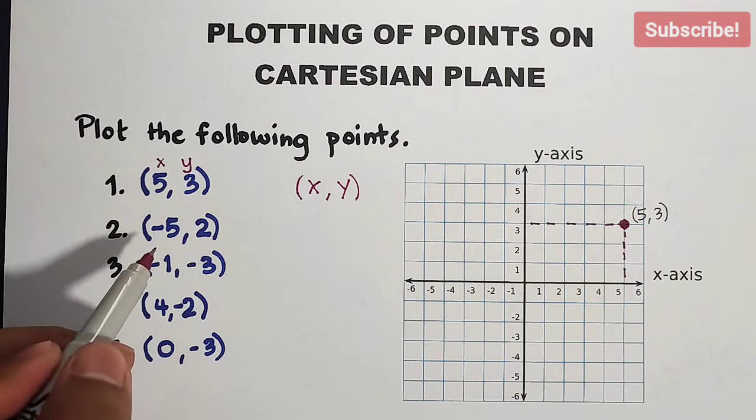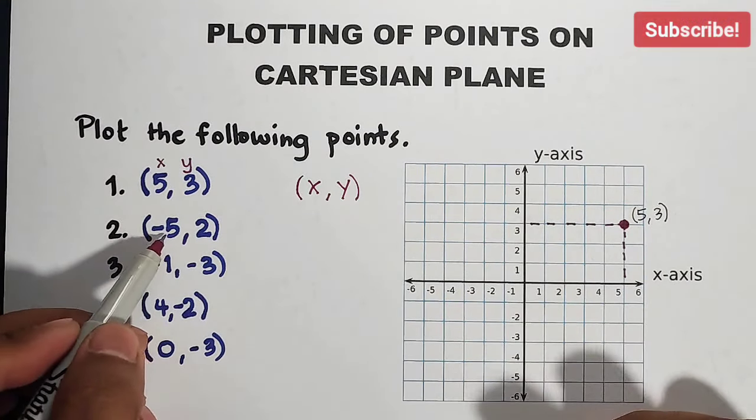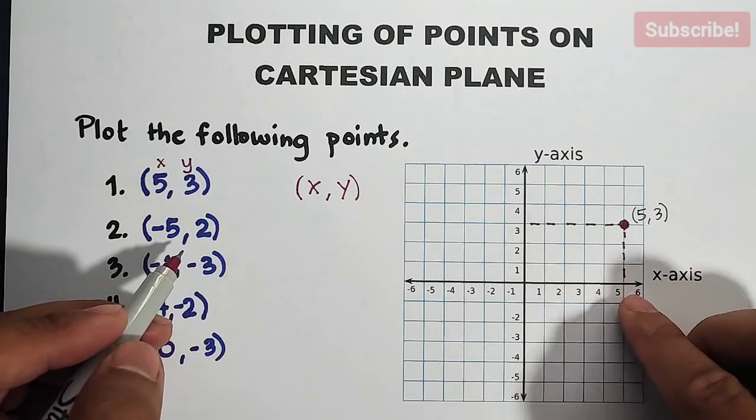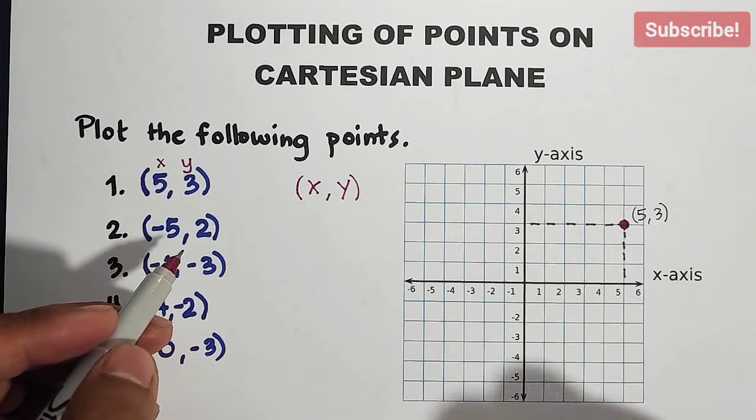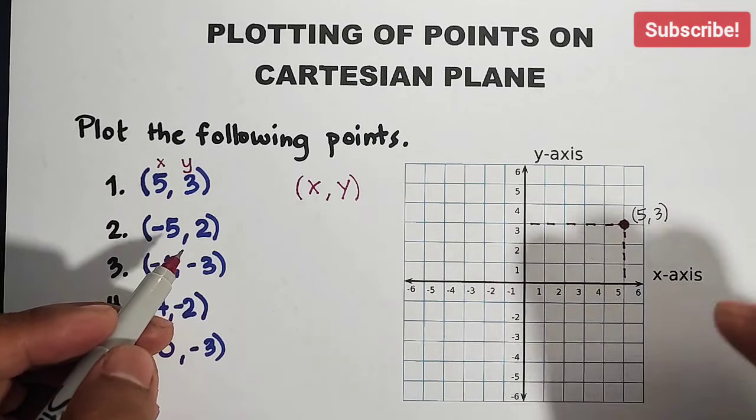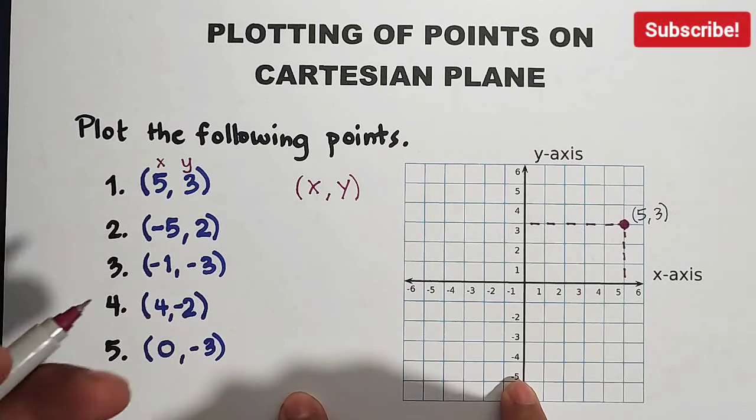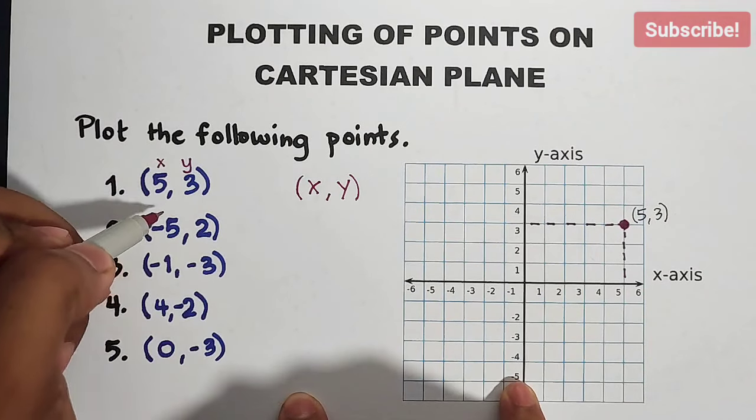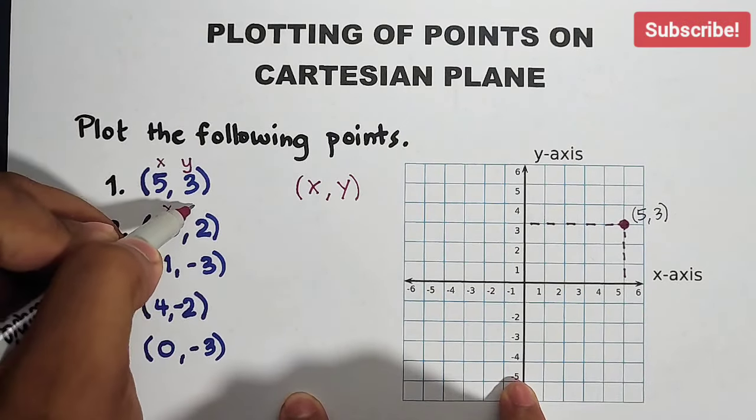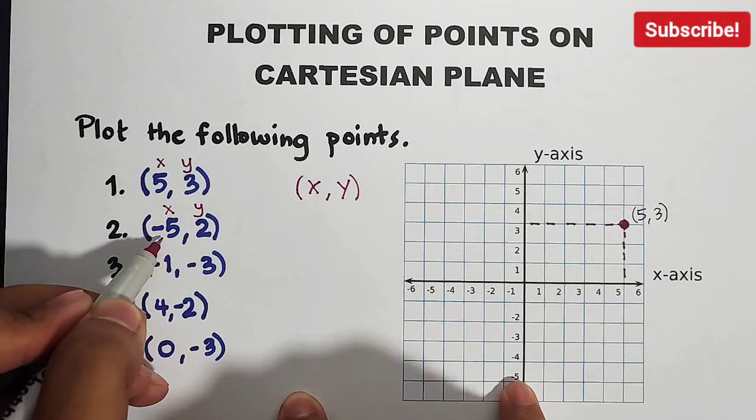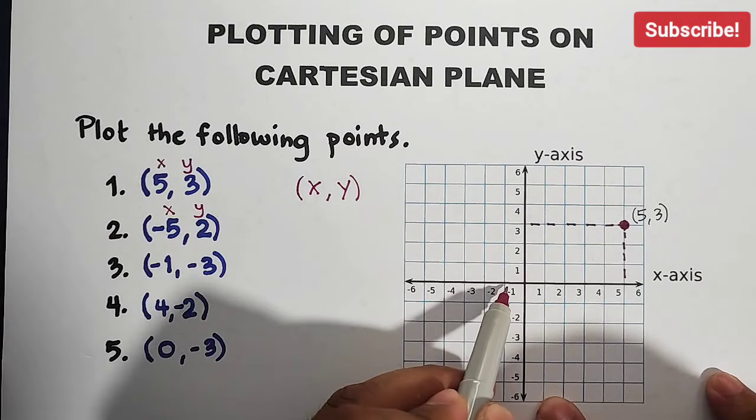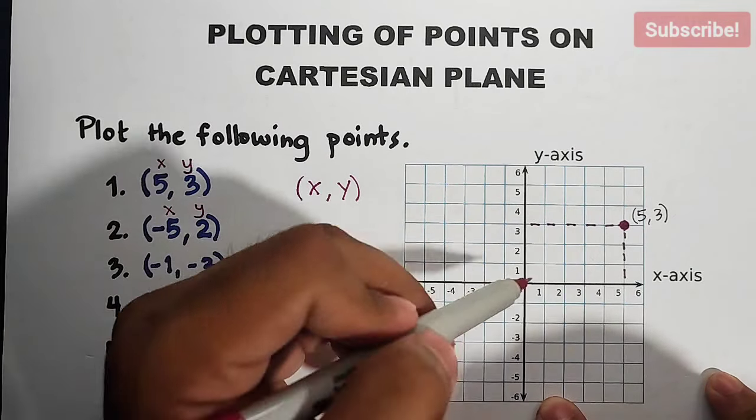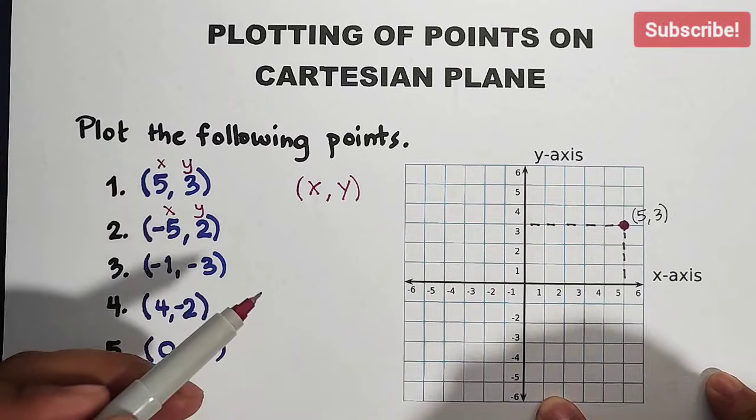Next, let's move on with item number 2. For number 2, we have (-5,2) but we're not going to use the broken lines. Okay? I just showed you the basic way on how to do it but let's try without the broken lines. (-5,2). This is your x and this is your y. Since your x is negative 5, it's here. Your y is positive 2, it's here. That means quadrant number 2.